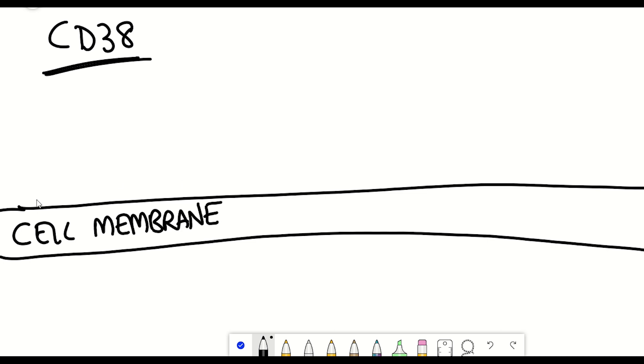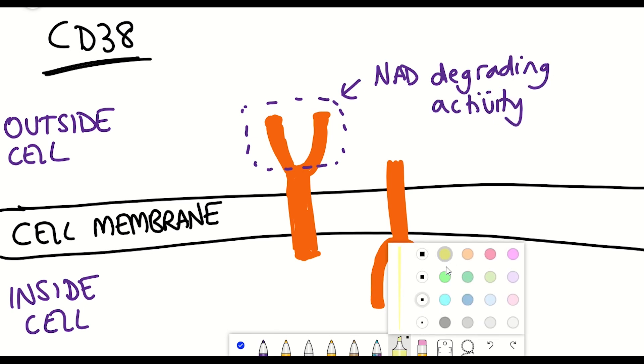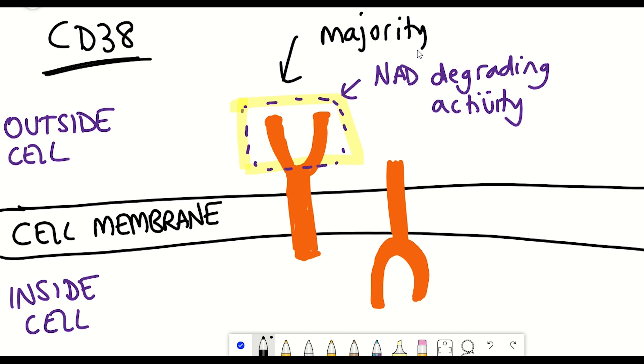CD38 is a really interesting protein, and this is because its enzymatic domain—basically the parts of the protein that degrade NAD—can only face one side of the membrane. So either the enzymatic domain is inside the cell or is outside the cell. The majority of CD38 has an orientation such that the enzymatic domain is facing the outside of the cell.